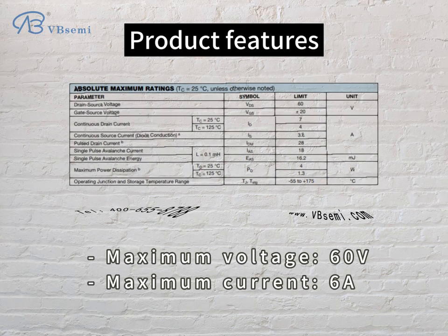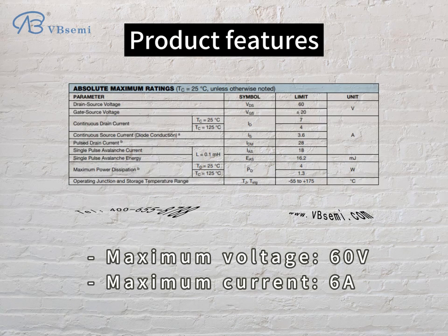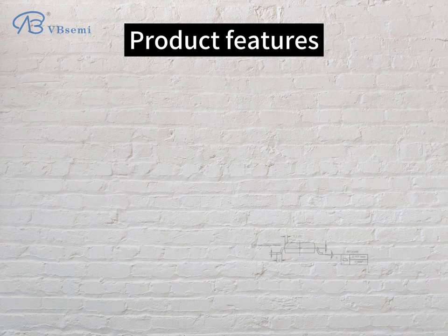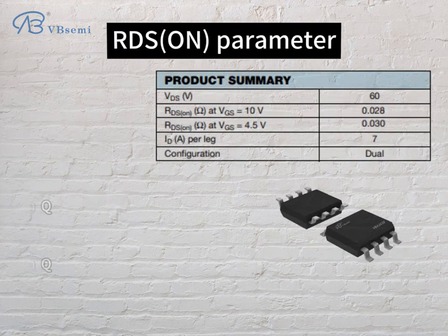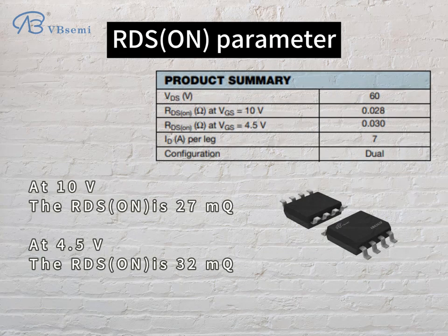Rated voltage: 60V, maximum current: 6A. The gate voltage range is ±20V. Threshold voltage VTH is 1.5V. RDS(ON) parameter: at 10V the RDS(ON) is 27mΩ, and at 4.5V the RDS(ON) is 32mΩ.